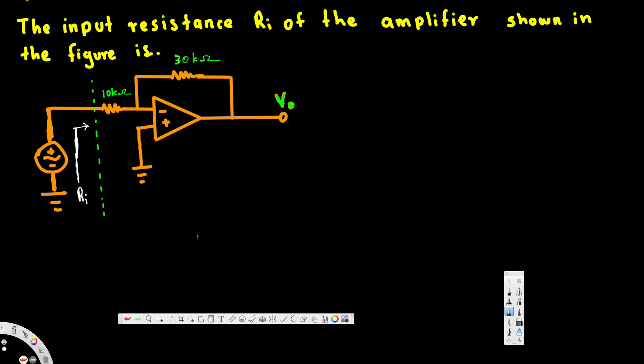Hey, what's going on guys, let's look at this problem right here. The question is asking: the input resistance Ri of the amplifier shown in the figure is what?